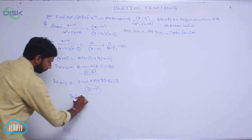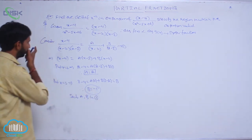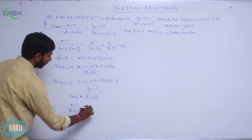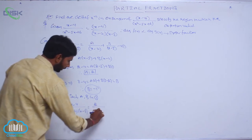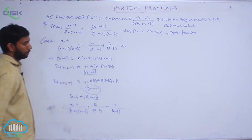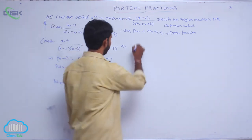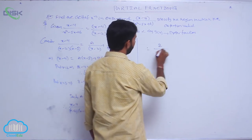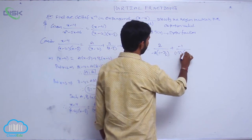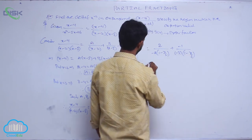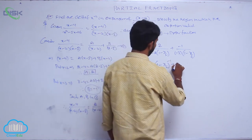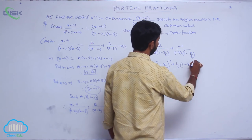Substitute A and B in condition number 1. Therefore (x minus 4) by (x minus 2)(x minus 3) equals 2 by (x minus 2) plus (minus 1) by (x minus 3). This equals minus 1 times (1 minus x/2)^(minus 1) plus (1/3)(1 minus x/3)^(minus 1).